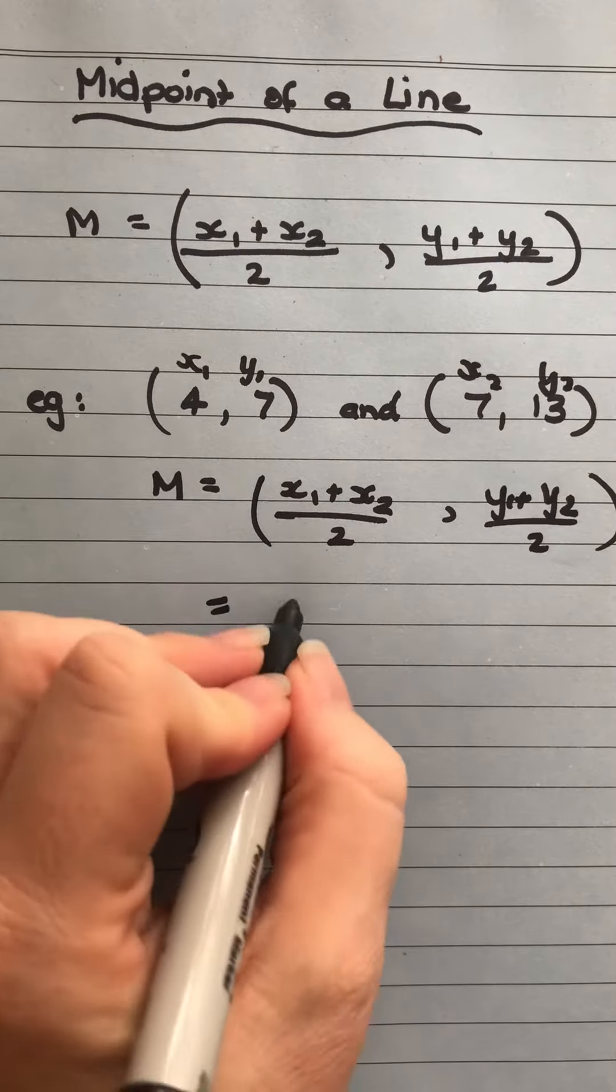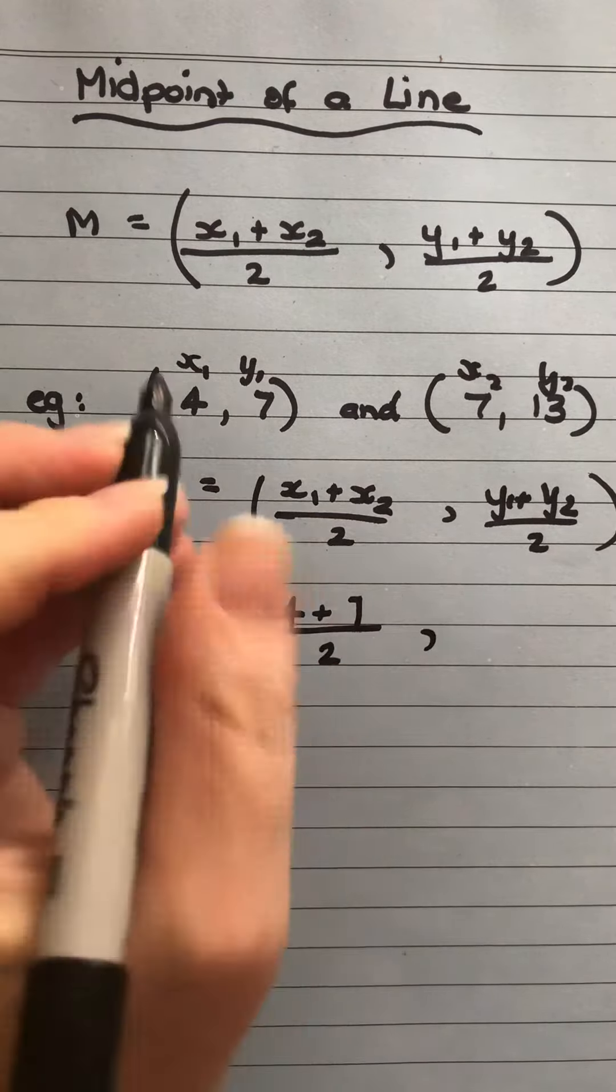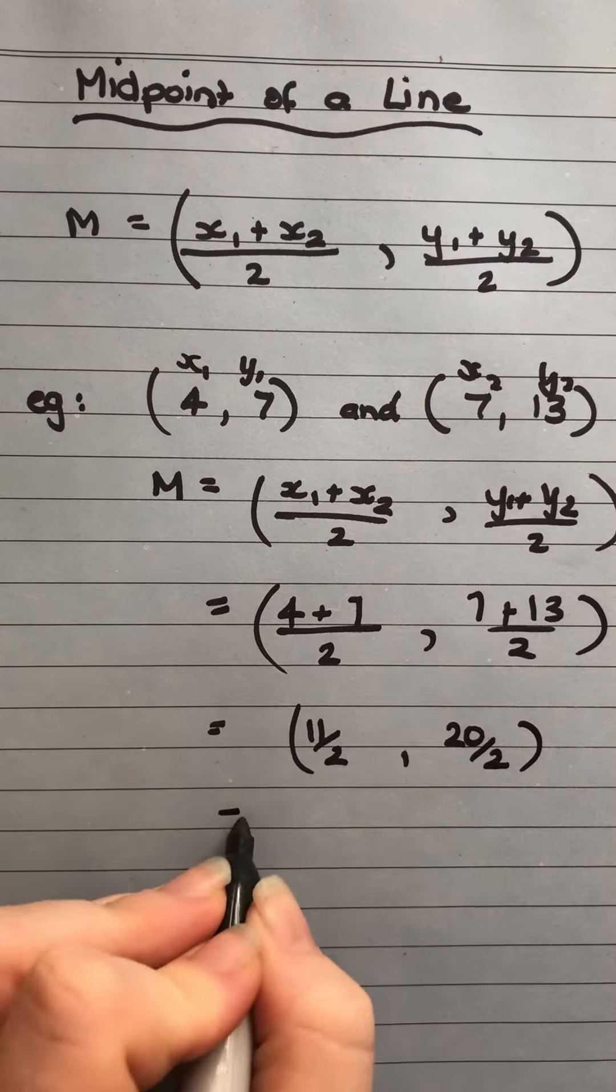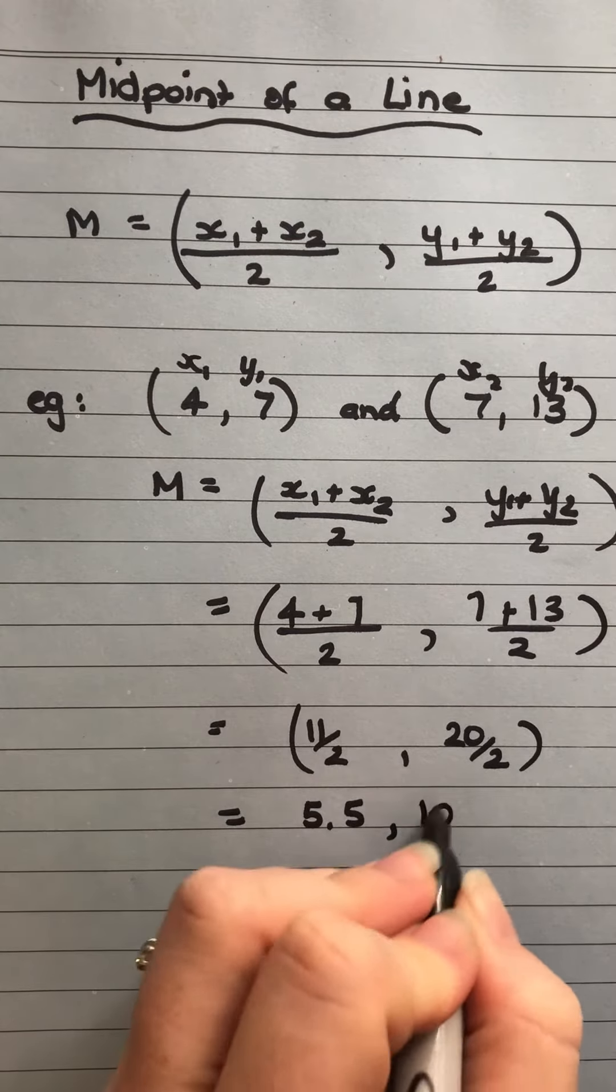So my x1 is 4 plus 7 over 2, and then I've got 7 plus 13 over 2. Now when I do 4 plus 7, I get 11 over 2, and 7 plus 13 is 20 over 2. Now the 11 over 2 gives me 5.5, the 20 over 2 gives me 10.